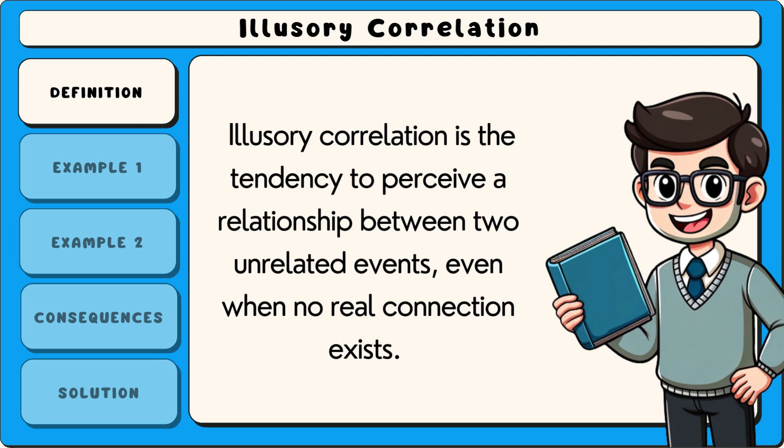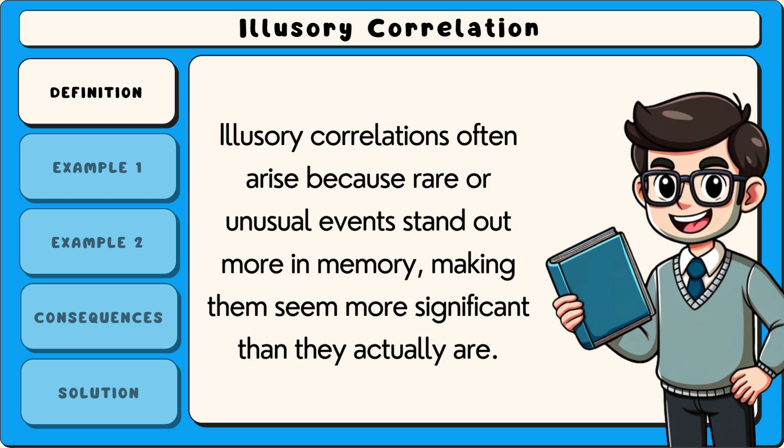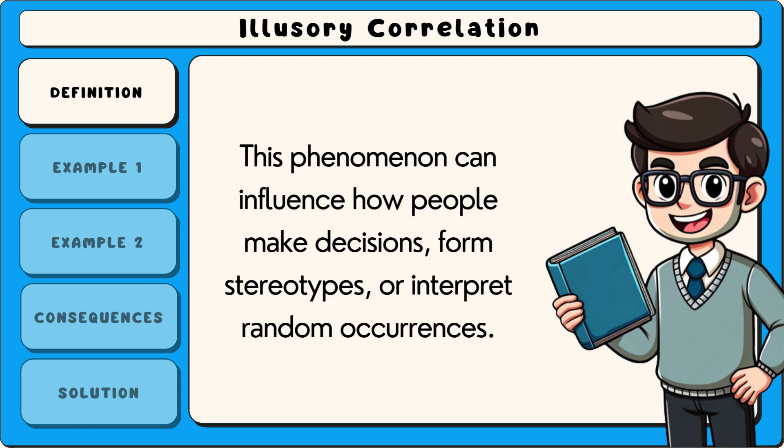Illusory correlation is the tendency to perceive a relationship between two unrelated events, even when no real connection exists. This cognitive bias occurs when people notice patterns that confirm their existing beliefs while ignoring information that contradicts them. Illusory correlations often arise because rare or unusual events stand out more in memory, making them seem more significant than they actually are. This phenomenon can influence how people make decisions, form stereotypes, or interpret random occurrences.